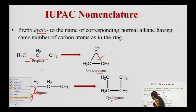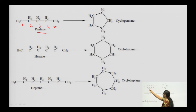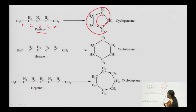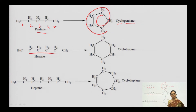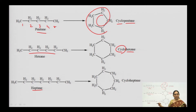For pentane — carbon 1, 2, 3, 4, 5 — when made into a closed form, you prefix 'cyclo' to give cyclopentane. Similarly, a 6-carbon chain (hexane) cyclizes to form cyclohexane. A 7-carbon chain (heptane) cyclizes to form cycloheptane. So first, identify how many carbons are in the ring — the ring is formed from the corresponding alkane chain.